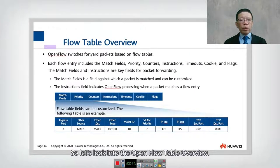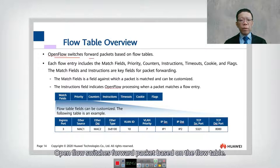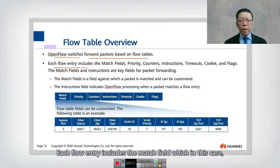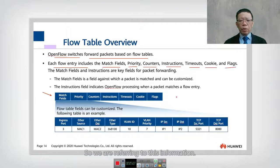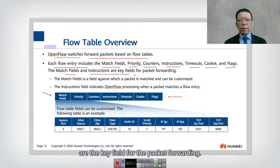Let's look at the OpenFlow table overview. OpenFlow switches forward packets based on the flow table. Each flow entry includes the match field, priority, counter, instruction, timeout, cookie, and flag. The match field and instruction are the key fields for packet forwarding.